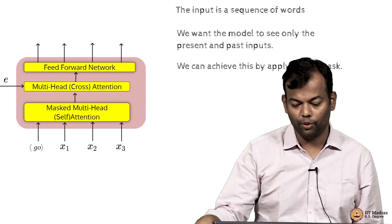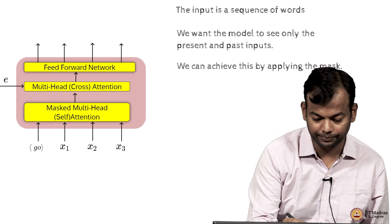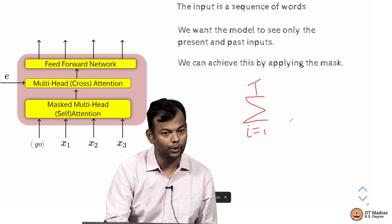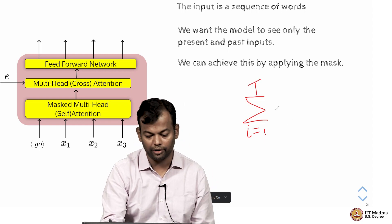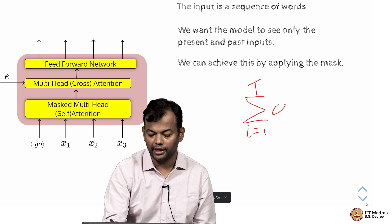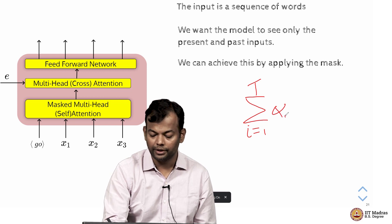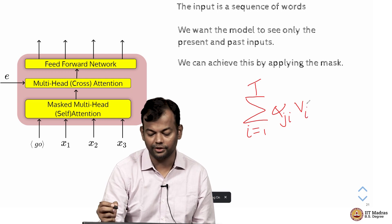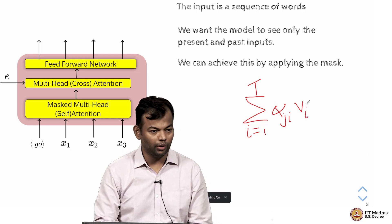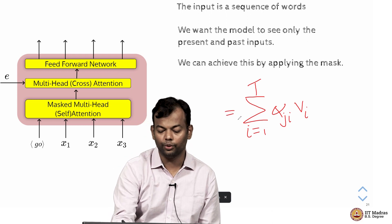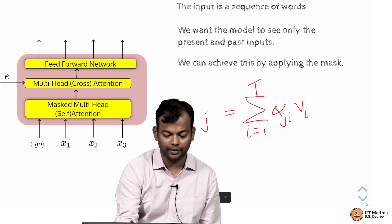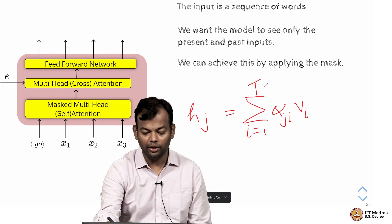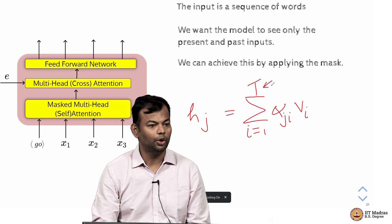So that is good as saying that when I am going to take a summation i equal to 1 to t, whereas t is the sequence length. Again this is the entire paragraph or document given to me and say alpha j i into v i. So this is the vector of the i-th word and this is how I am going to compute a new representation for the j-th word. So let me call this as h j and this contains all the t words in the equation. I do not want all the t words.